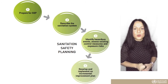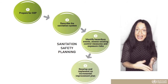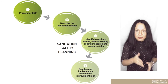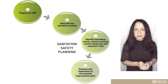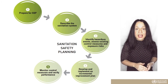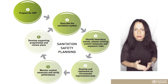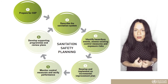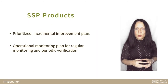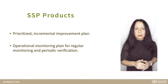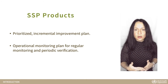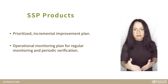In Module 4, we select improvement measures that address the highest risks, and use selected options to develop and implement an incremental improvement plan. In Module 5, we prepare a monitoring and verification plan. Finally, in Module 6, we develop supporting programs and evaluate the effectiveness of our SSP. Carrying out the sanitation safety planning process will result in two products: a prioritized incremental improvement plan, and an operational monitoring plan for regular monitoring and periodic verification.